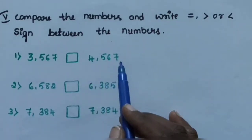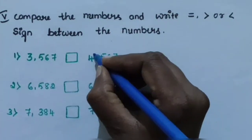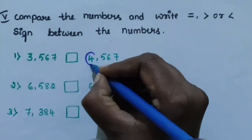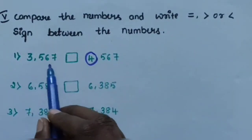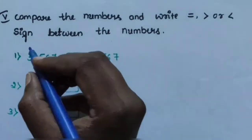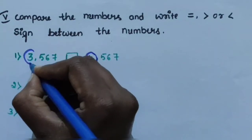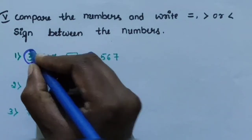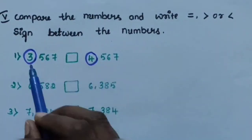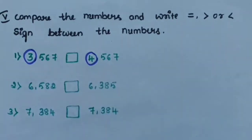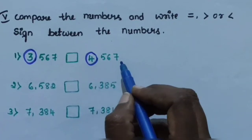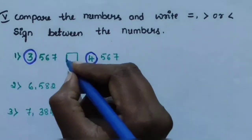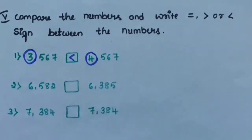3567 and 4567 — these two numbers are 4-digit numbers. Compare the highest place value: 4567 has 4 in the 1000s place and 3567 has 3 in the 1000s place. Comparing 4 and 3, 4 is the greatest, so 4567 is the greatest number.